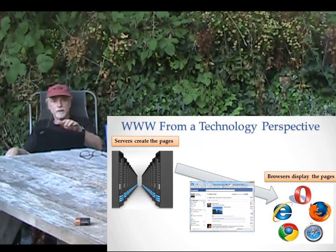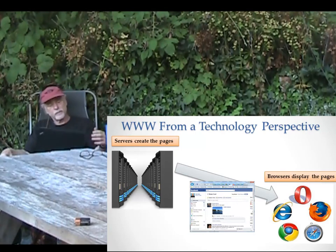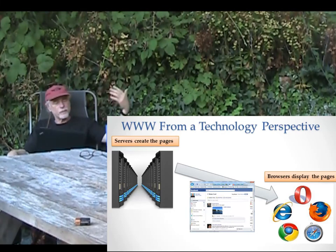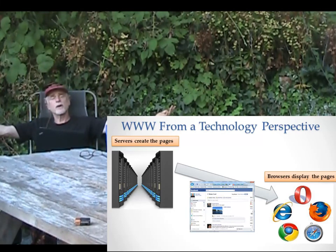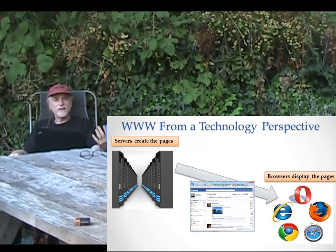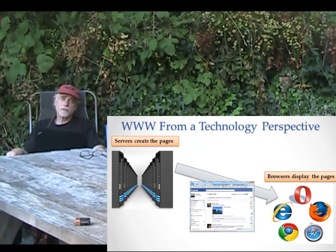You can have a computer — and this one right here has a browser and a server on it. When I want to be a server, I'm a server. When I want to be a browser, I'm a browser. The browser, as well, is software that runs on a computer — software running on one computer communicating with software running on another computer through the Internet. The Internet is the network; the World Wide Web is the application that runs on that network, consisting of servers and browsers.